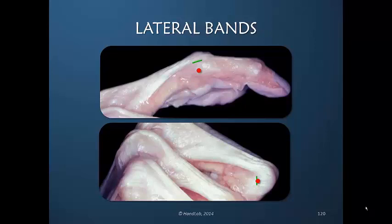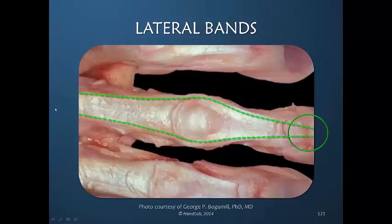It's only in cases of pathology such as a boutonniere deformity, when there is no continuity of these tissues, that the lateral band moves and stays volarly to the axis of the PIP joint. Here is another illustration showing the lateral bands — a dramatic view of how the lateral bands have to circumvent the mountain of the PIP joint.